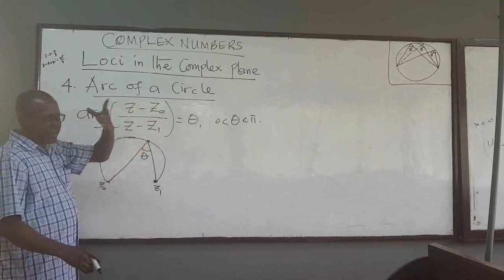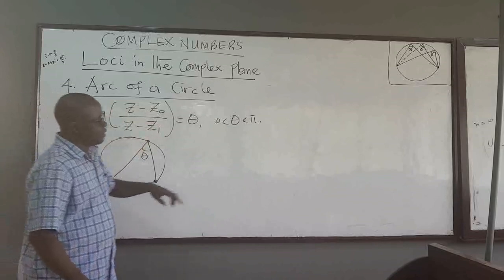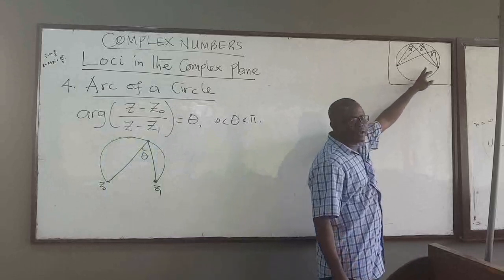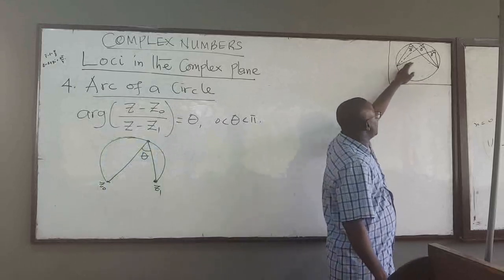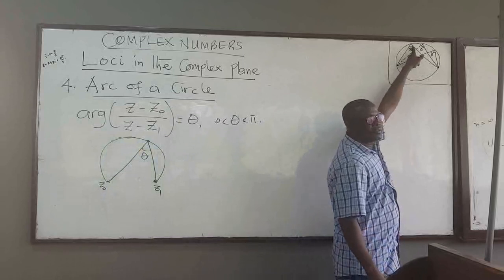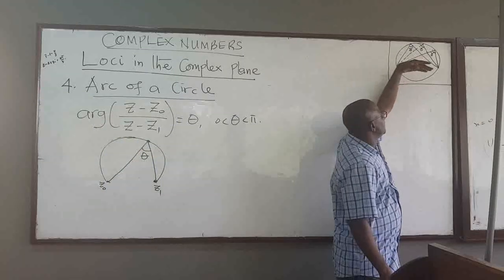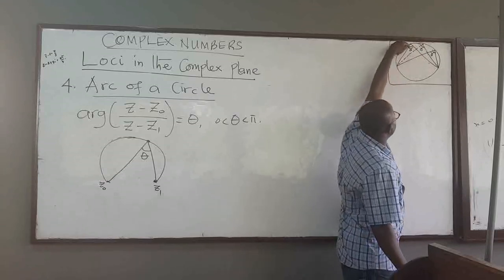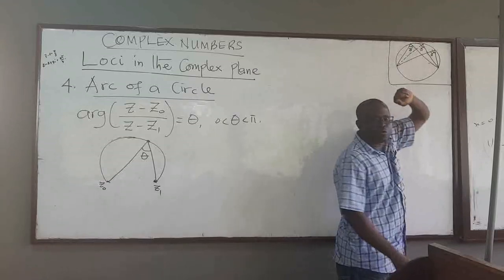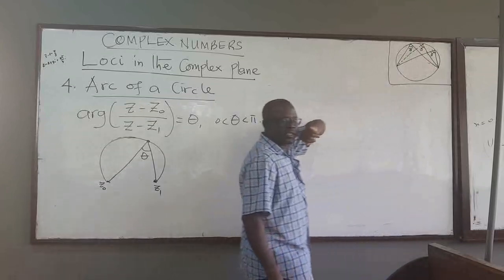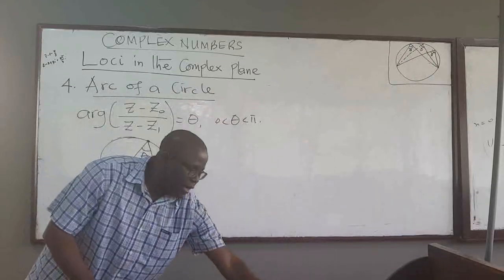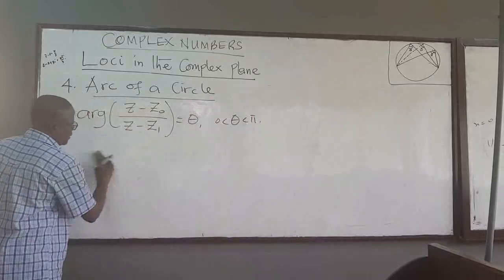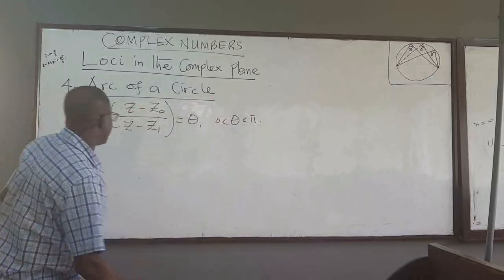I will mention two or three things you need to keep in mind. The most important one is: whenever you have a circle, the angles that are subtended at the circumference of a circle in the same segment are always equal. So on that side of the segment, the angles subtended are always equal. Now let me show that this equation indeed describes the half of a circle.